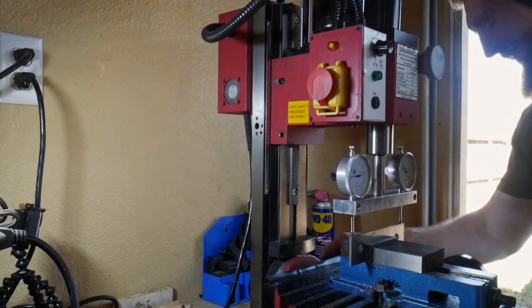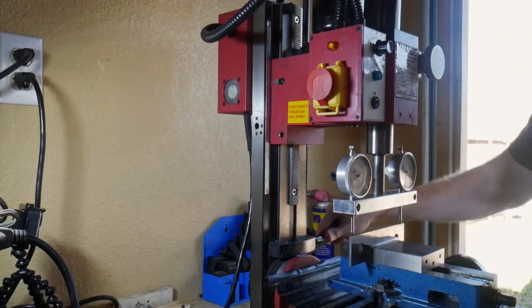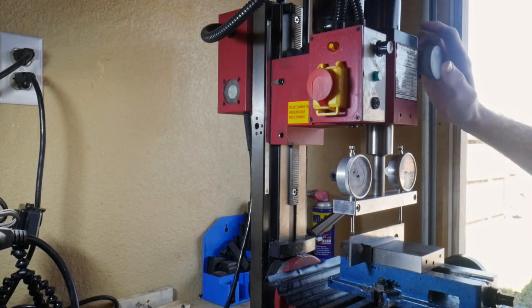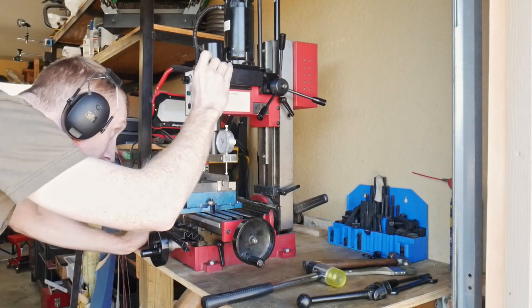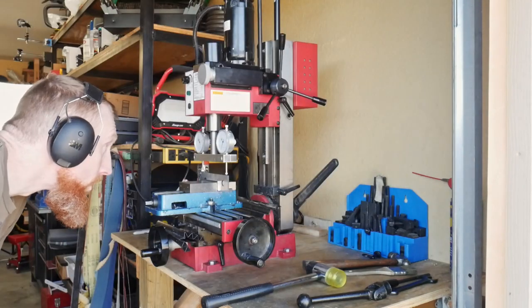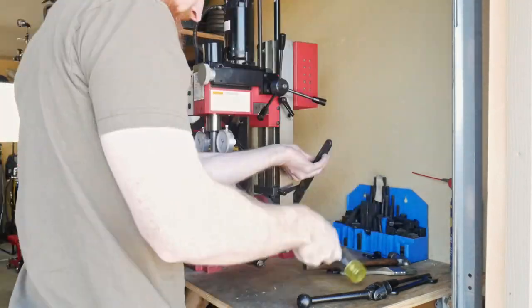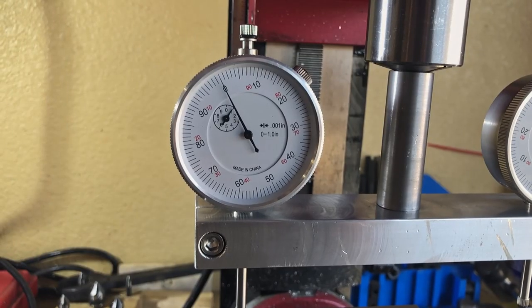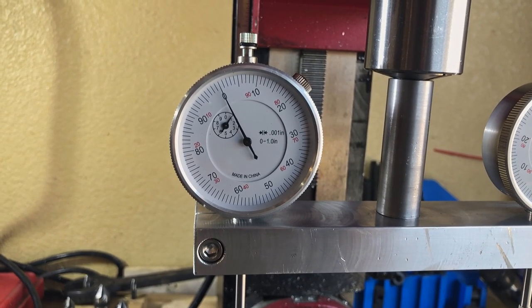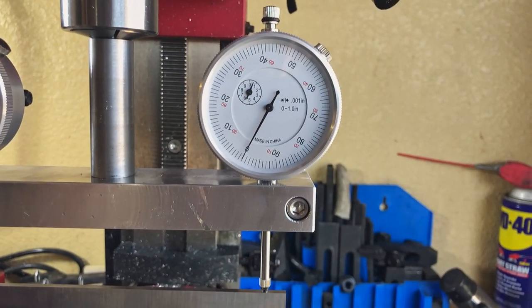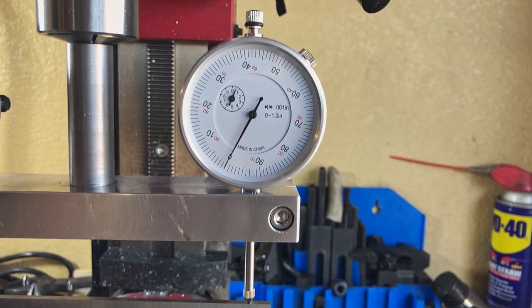My process for getting the mill back in tram is pretty simple. I will look at both indicators and see what direction I need to move the column and then give very light taps with a soft blow hammer in that direction until the two indicators line back up with each other. I'm also tightening the back nut throughout the process because the tightening or loosening of that nut can have an effect on the tram of your mini mill.